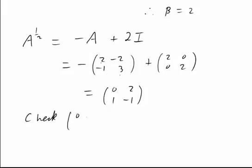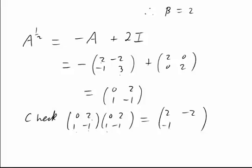Let's double check that when we square it we should end up back with A. Doing the matrix multiplication we get 0 times 0 and 2 times 1, 0 times 2 and 2 times negative 1, 1 times 0 and negative 1 times 1, and 1 times 2 and negative 1 times negative 1 that's plus 1 so it makes 3. Again that has come to A.